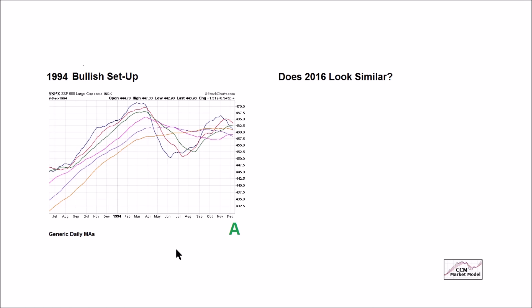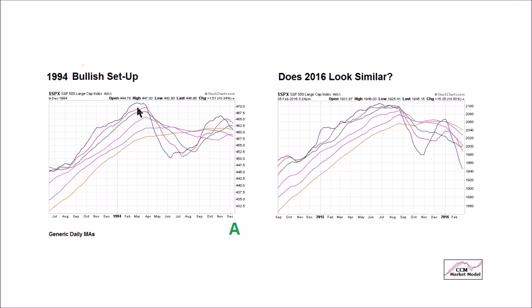Moving to the generic daily moving averages with price removed to focus on trends: does the present day look similar, weaker, or stronger to point A in 1994? In 1994, we made a higher high then a low, then a lower high, but never a lower low in the moving averages because we rallied from that point. In the present day we have a high, a low, a lower high, and a lower low. Looking at the blue moving average — how high it was over the same roughly 16-month period in 1994 versus how low it is now — this is a weaker mathematical and lower probability profile of good things happening.